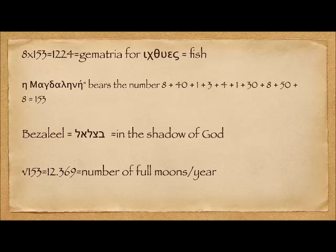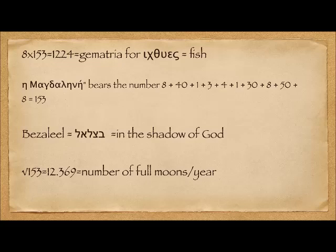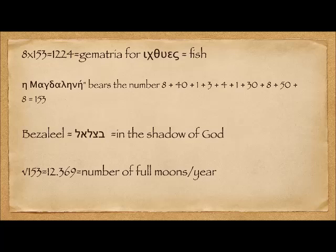Some other interesting gematria factoids on 153: eight times 153 is 1,224, and that is the Greek gematria for the word ikthus, which is fish. Himagdalini carries the gematria of 153, although I'm not sure what that has to do with the fish. The word betzalel — the master craftsman of the mishkan, of the tabernacle — has a gematria of 153. His name means 'in the shadow of God,' which is interesting because we as believers are encouraged to live under the shadow of his wing. Also, the square root of 153 comes out to 12.369, which is the number of full moons in a year, and the lunar calendar is central to Hebraic worship.